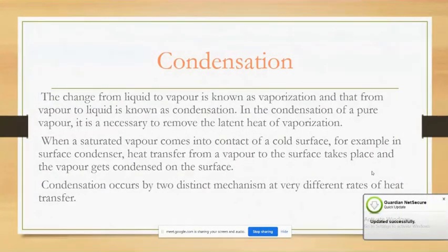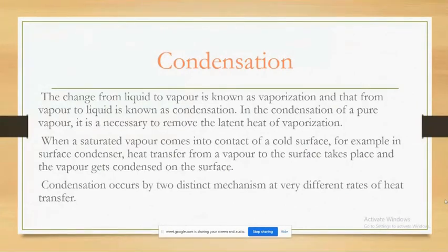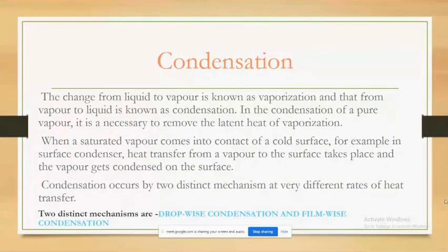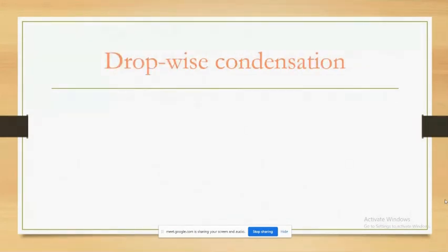In a surface condenser, heat transfer from a vapor to the surface takes place and the vapor gets condensed on the surface. Condensation occurs by two distinct mechanisms at very different rates of heat transfer. These two mechanisms are drop-wise condensation and film-wise condensation. Now my groupmate Balvinder will further explain.